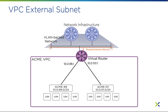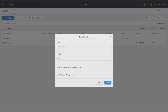A VPC can have up to two external networks: one external network that provides NAT functionality, and another external network that is set as routed, also known as no NAT. This routed functionality allows the native addresses of the VPC overlay subnets to be known by the external network via this external network connection.